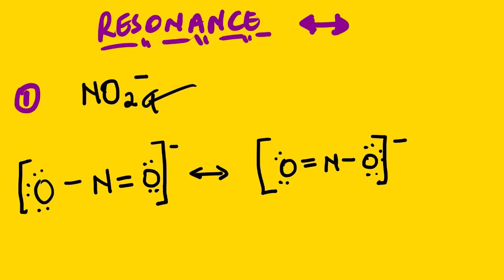We do have the most stable structure, but in this case you can see that the formal charges are more or less the same. This will have negative one, zero, zero and then we have zero, zero, negative one. In most cases, how do we tell which one is the most stable? We look at the structure that has more formal charges close to zero. So in this case you can see we have two zeros and one negative one.